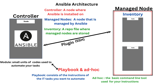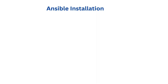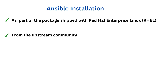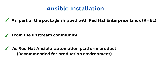Let's talk about the Ansible installation. The Ansible software can be gotten in three different ways. First, as part of the package shipped with Red Hat Enterprise Linux starting from RHEL 9 in the AppStream repository. It can also be gotten from the AppStream community. And thirdly, the Ansible software can be gotten as Red Hat Ansible Automation Platform products. Getting Ansible by this method is recommended for production environments because you will get full support from Red Hat, and you will also be able to download Ansible and its important tools from the Red Hat repository directly.